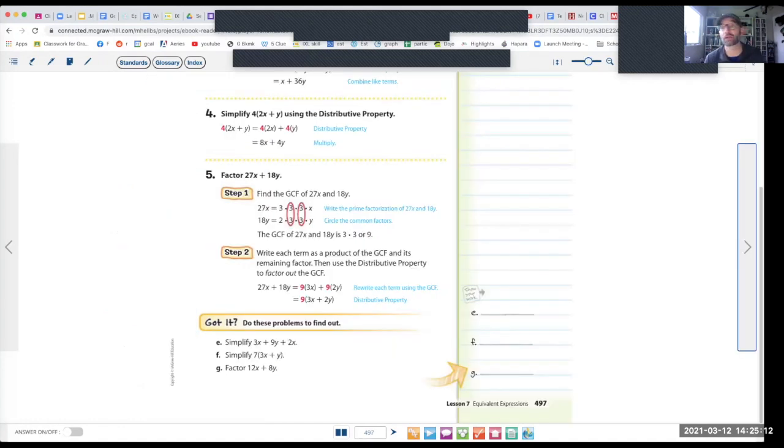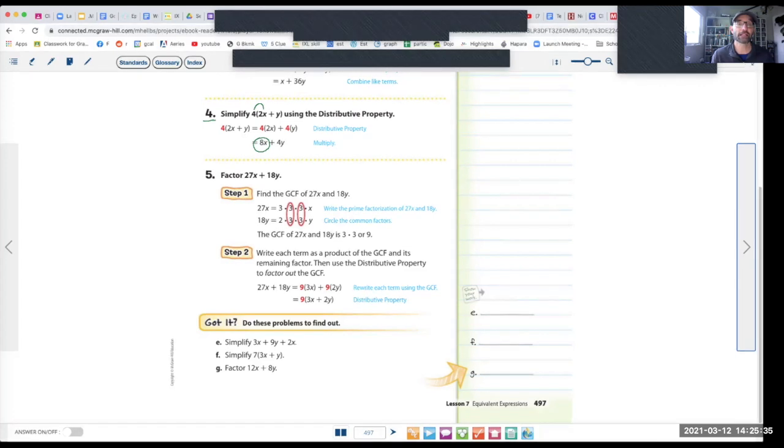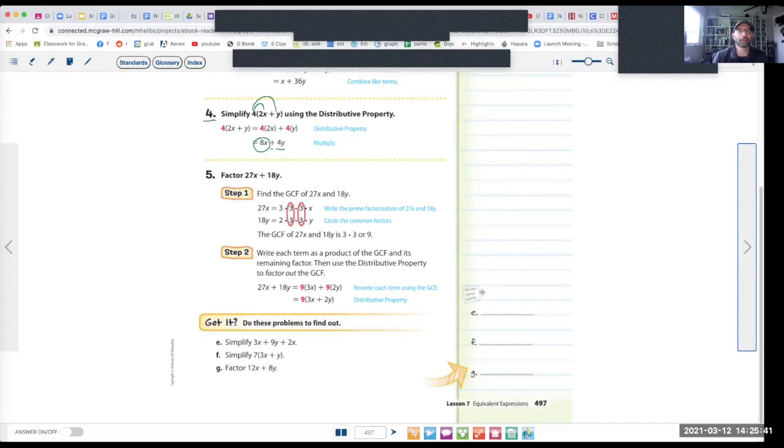All right, so now we're on page 497. And so this is stuff that we've done before, so I'm going to go through it a little bit fast because you know how to do it. So on number 4, the example says simplify 4 times 2x plus y. The only difference is that we have two variables here. So you know that you're going to do 4 times 2x. Look, 4 times 2x is going to be 8x, plus 4 times y is 4y. That's pretty easy, right?